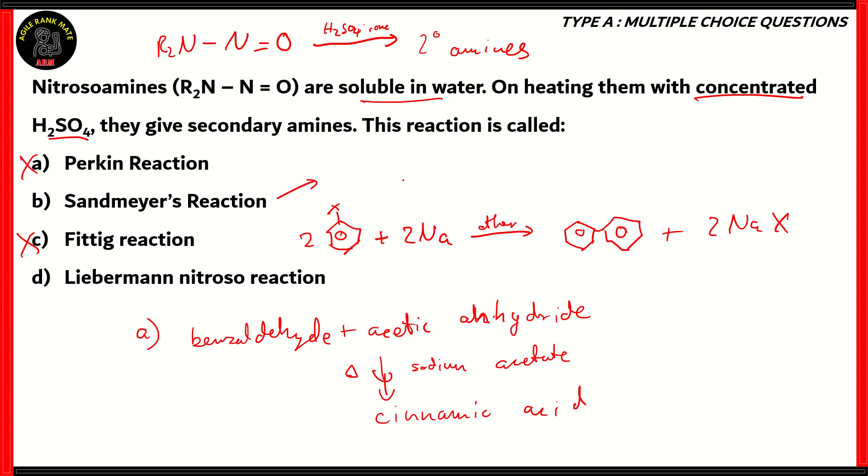Option B is Sandmeyer's reaction. This is the reaction that helps in forming aryl halides. So when you have benzene amine reacting with NaNO2/HX and then CuX, it forms the aryl halide. Therefore again, this does not involve a nitroso amine. Although there is a nitroso amine group, however it's not a nitroso amine, it's a benzene amine. So therefore option B is also incorrect.